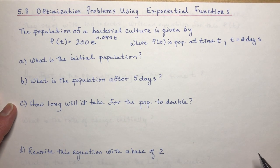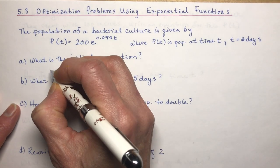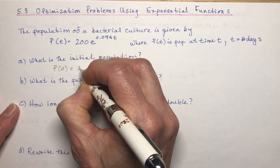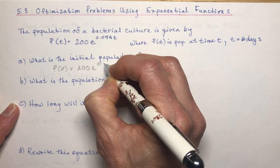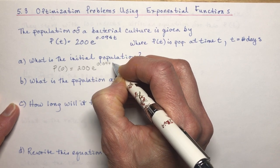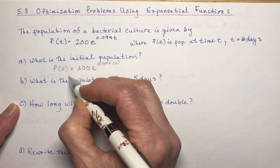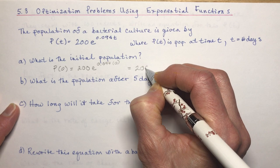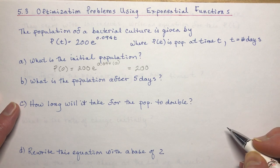The first question asks: what is the initial population? That's the population at time 0. So we calculate P(0) = 200 times E to the power of 0.094 times 0. Since anything to the power of 0 is 1, that gives us 200. So there are 200 bacteria at time 0.